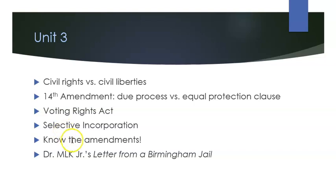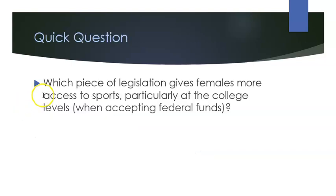Not all amendments and their aspects have been fully incorporated, so be aware of that and know the amendments. The hallmark document here is the Letter from Birmingham Jail, which espouses civil disobedience by Dr. Martin Luther King Jr. — written to white clergy who were telling him to remain calm and wait it out, despite the 300-plus year struggle that Black Americans had been fighting. And which piece of legislation gives females more access to sports, particularly at the college level when accepting federal funds? If you said Title IX, you are correct.